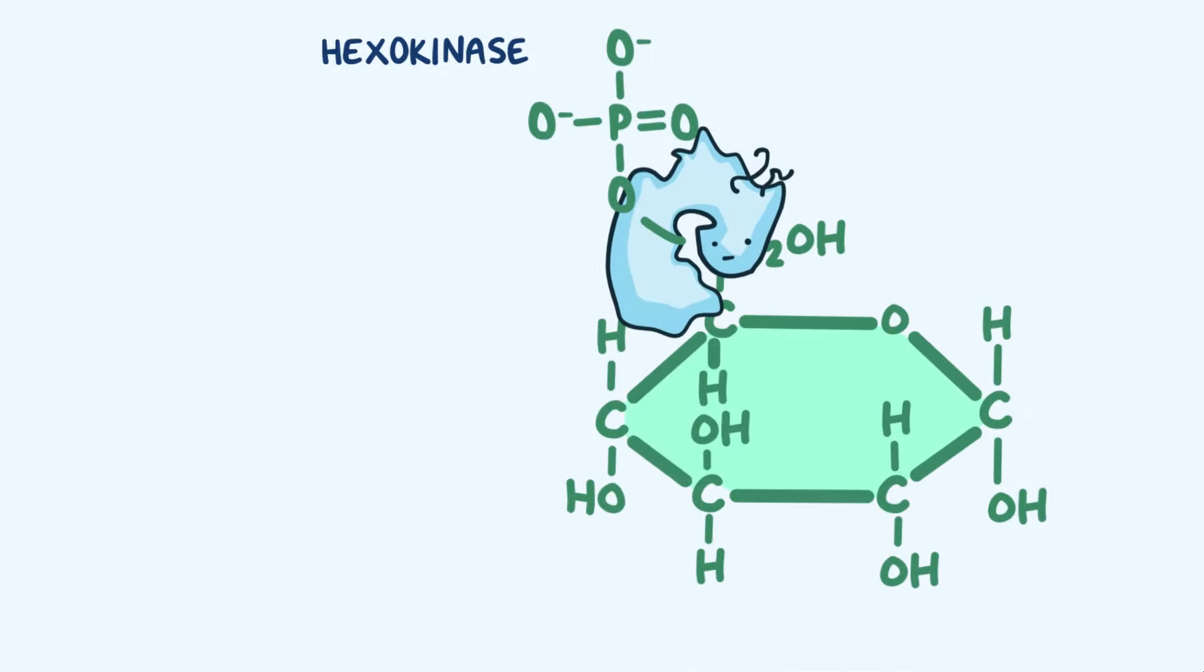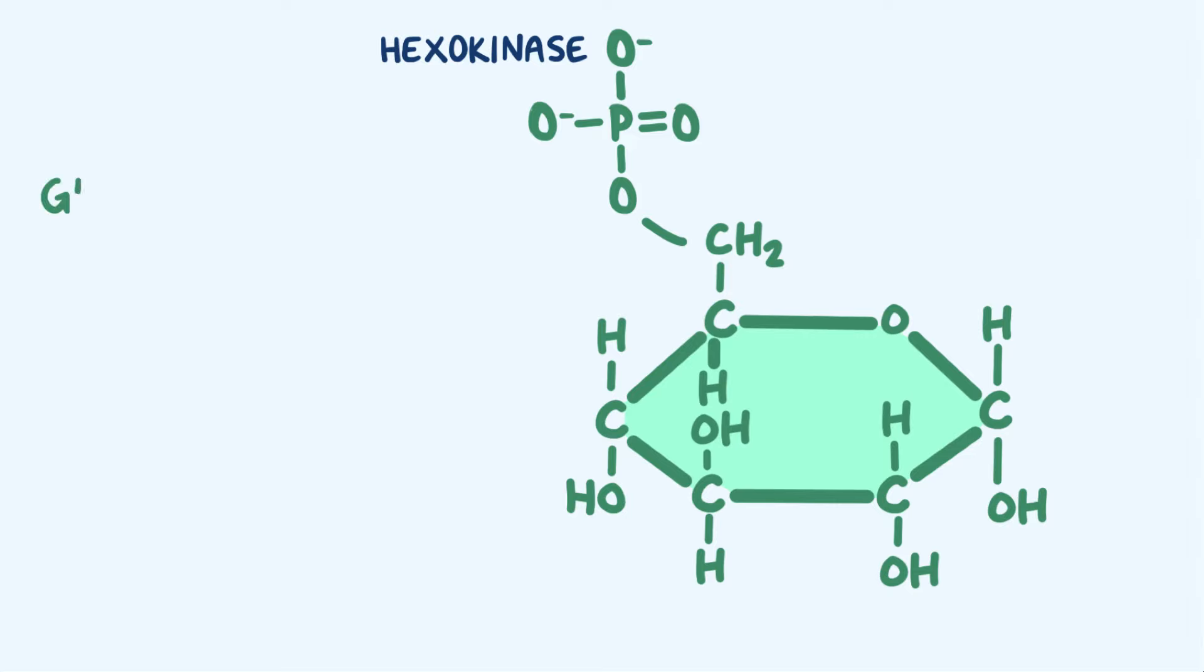Inside the cell, an enzyme called hexokinase adds a phosphate group to its 6-carbon, creating glucose 6-phosphate. Then glucose 6-phosphate is broken down during glycolysis, making ATP as a byproduct.